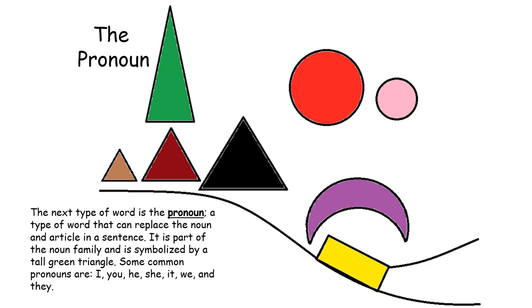The next type of word is the pronoun, a type of word that can replace the noun and article in a sentence. It is part of the noun family and is symbolized by a tall green triangle.